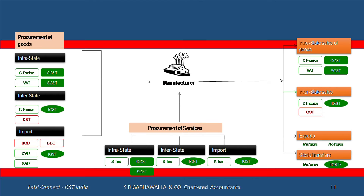Typically, a manufacturer who buys goods today has excise and VAT. That excise and VAT gets replaced by CGST and SGST. So in your purchase bills as a manufacturer, instead of central excise you will have CGST, and instead of VAT you will have SGST. Today you get credits of excise — you will continue to get credit of CGST. Instead of VAT there's SGST, and again the same credits will be available.